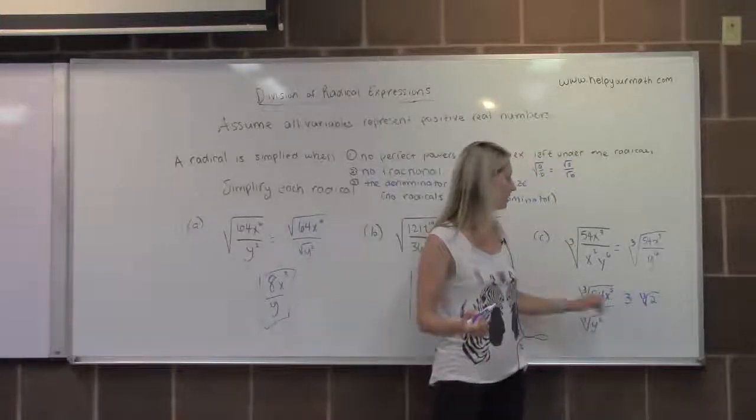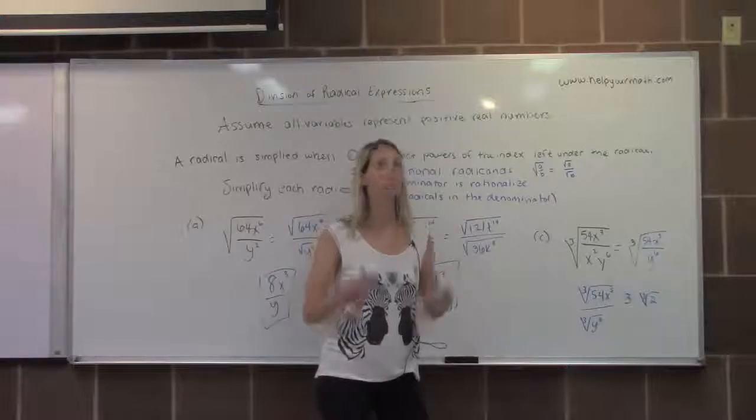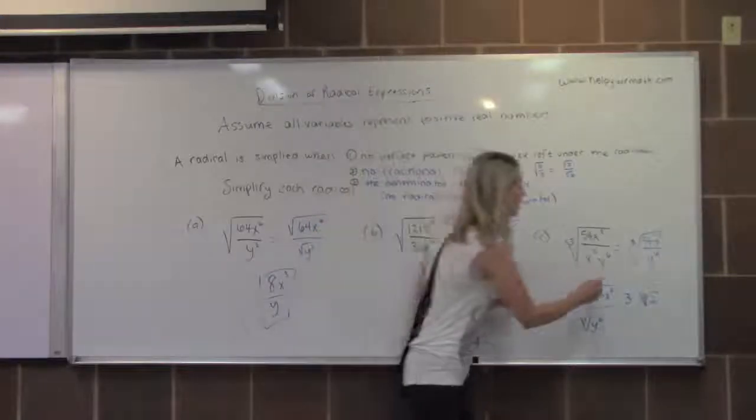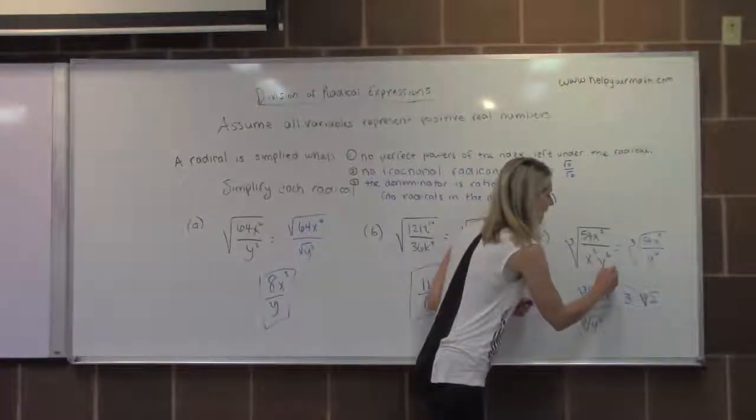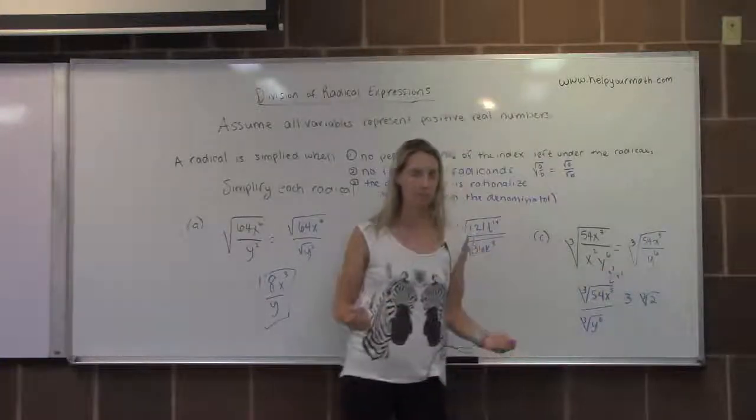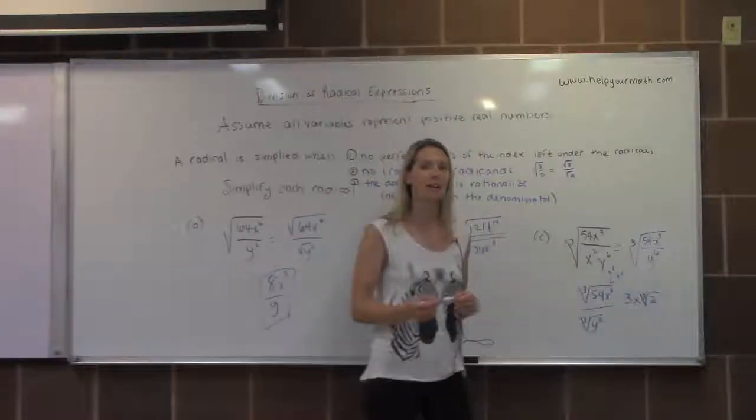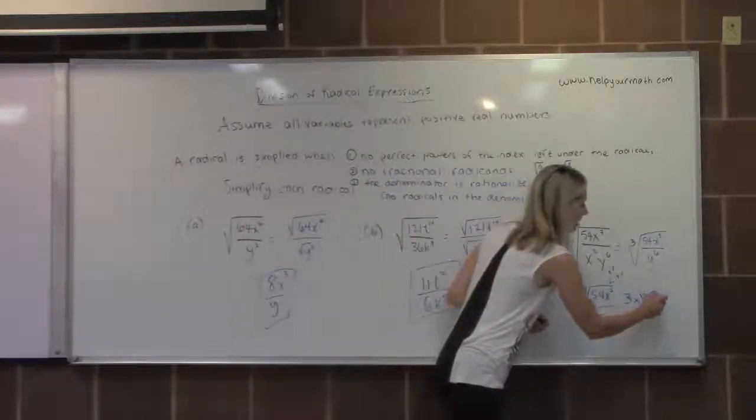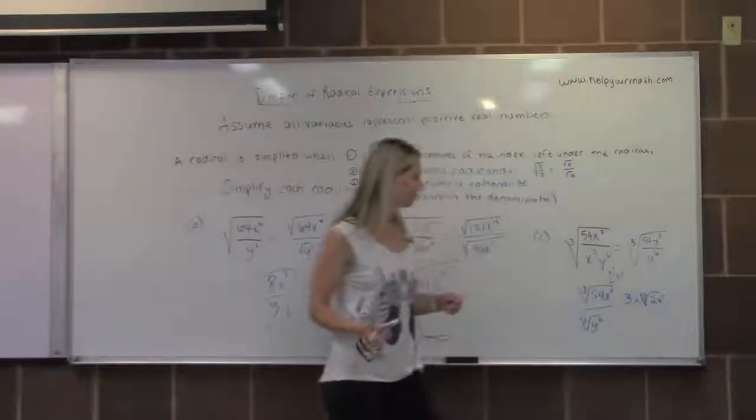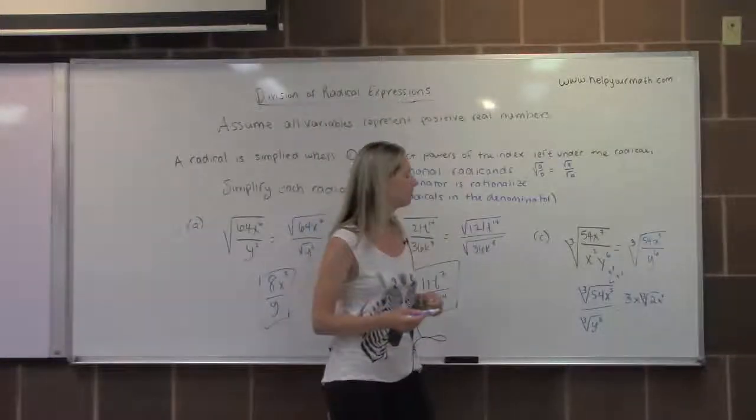I need to simplify x to the fifth. x to the fifth has a perfect cube factor, and it would be x cubed. So we can think of x to the fifth as x cubed times x squared. We can take the cube root of x cubed, it would be x itself, and x squared is going to be stuck under the radical. So that's the numerator: 3x times the cube root of 2x squared.